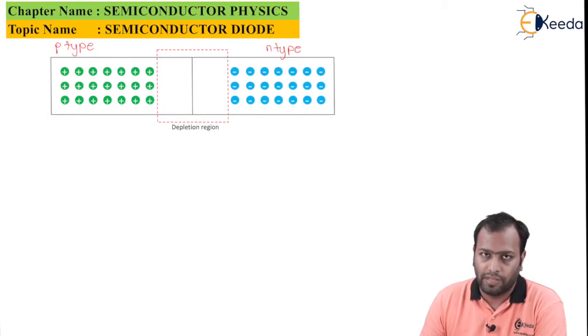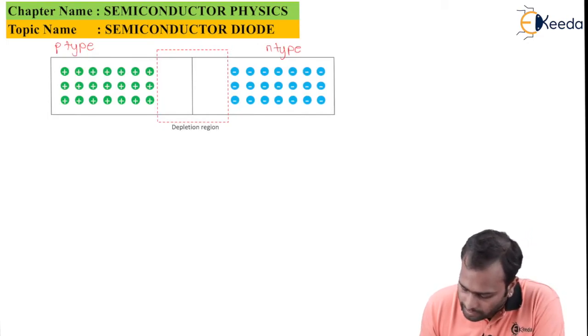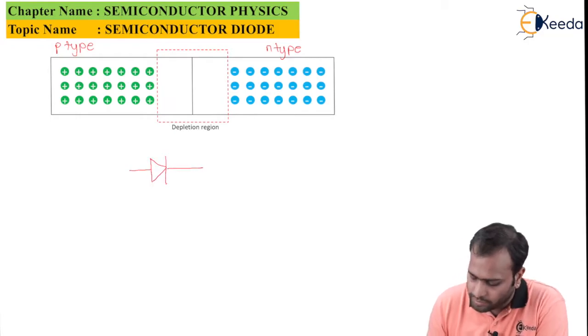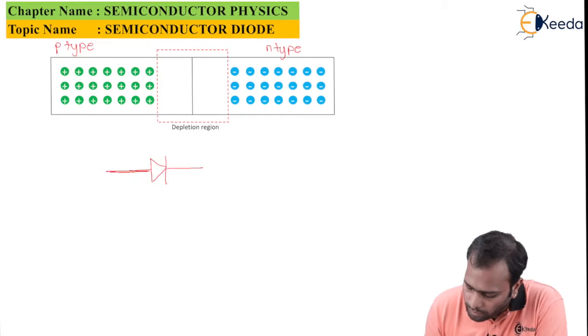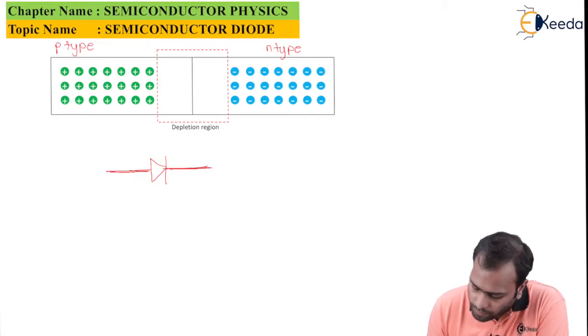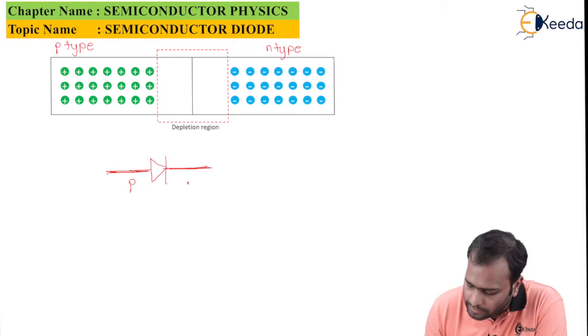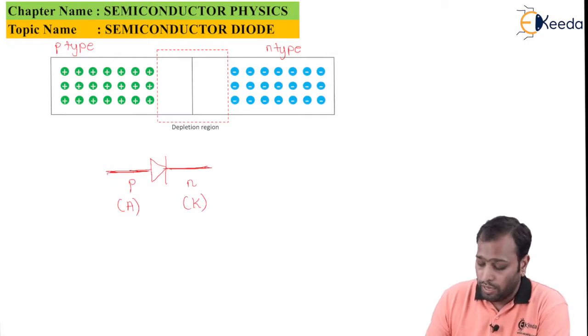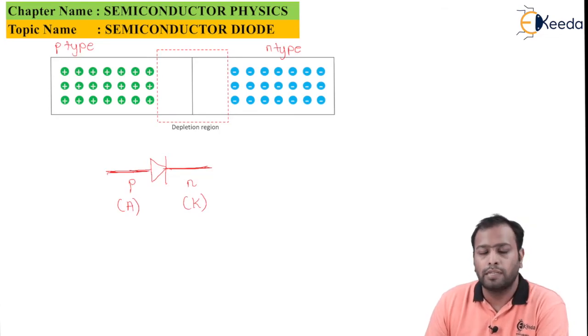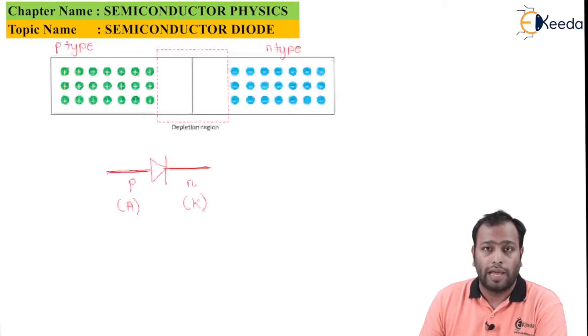This symbol is appearing like this. This part is P-type and this part is N-type. This is also called as anode and this is also called as cathode. So this is how your diode looks like, or you can see this is the symbol of diode. Now a diode can be biased. Now what is biased? Well, how can the diode be biased?